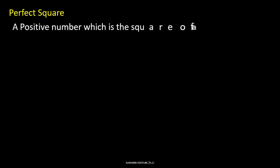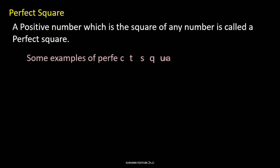Now next topic is what is the perfect square? A positive number which is the square of any number is called the perfect square. Now see some examples of perfect square. 1 is the square of 1, that is a perfect square.